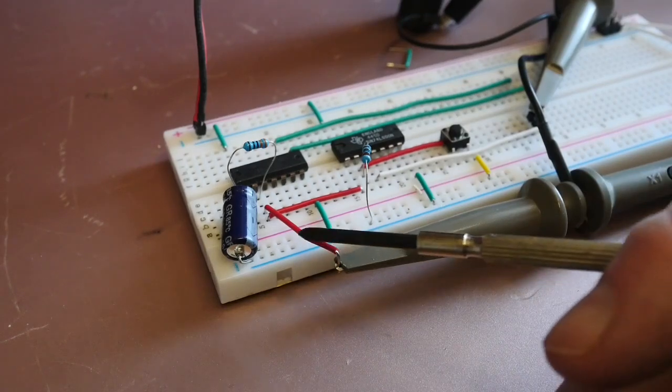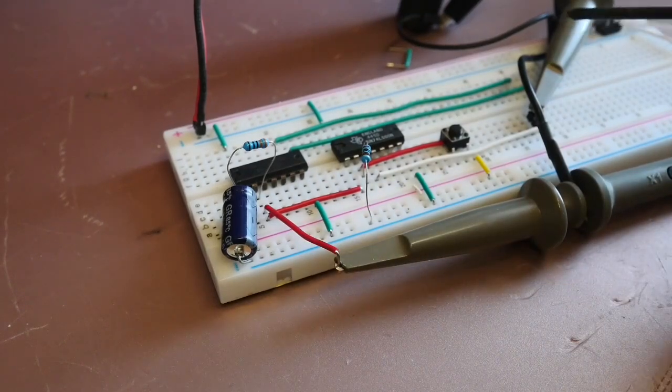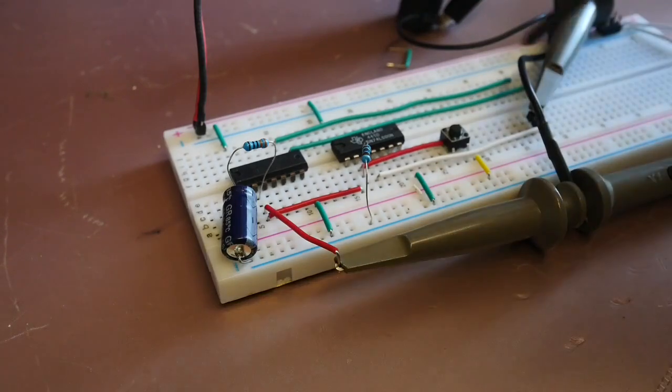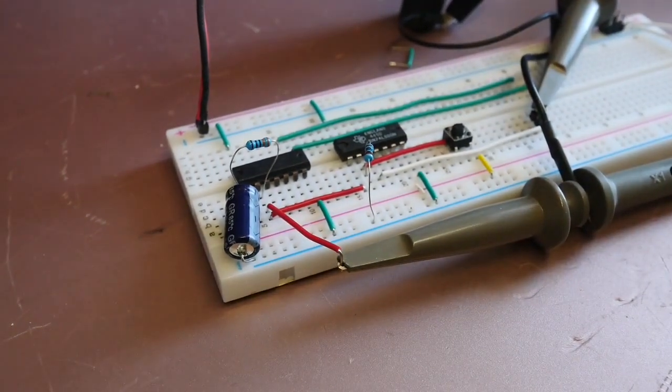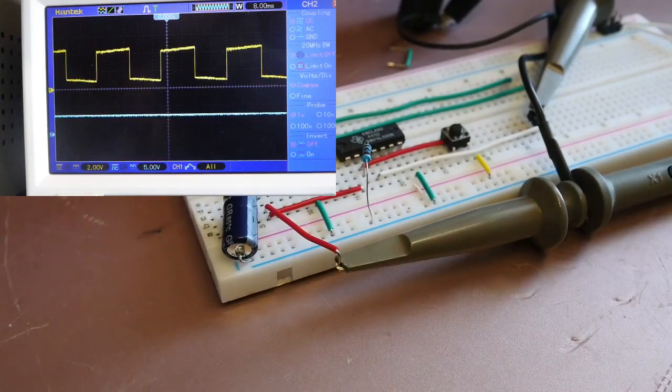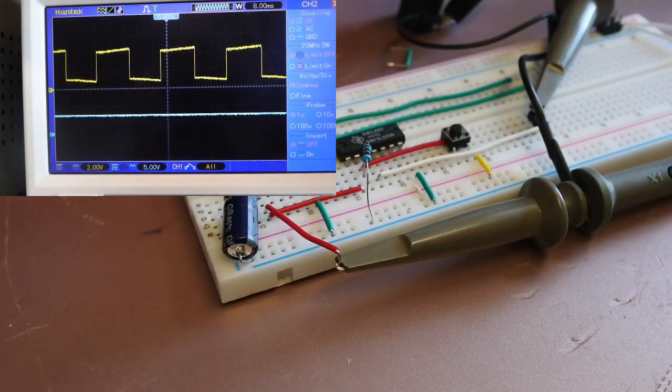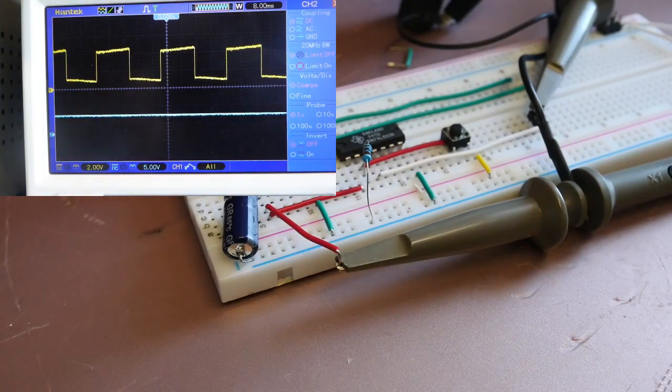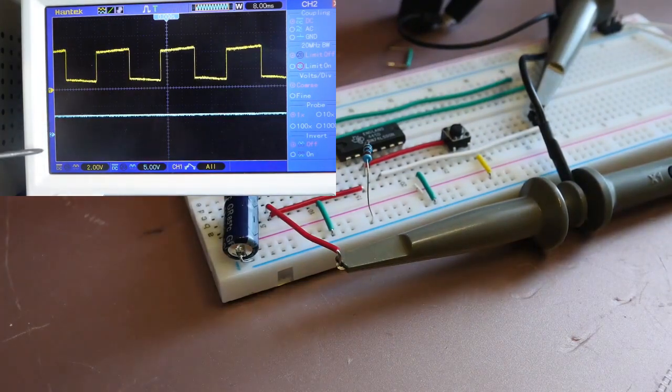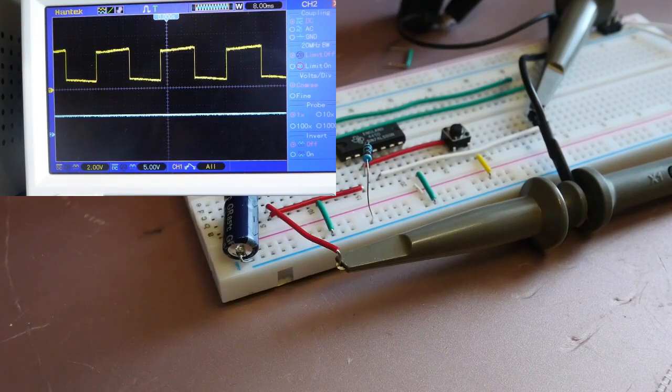So let's have a look what's happening. We've got channel one of the scope still attached to the oscillator. Channel two is now attached to the output of that gate. So let's have a look at the display. You can see what we've got there is we've still got the pulsing going on as normal, and we appear to have nothing here. Actually, if you look, what we actually have got is that that gate is high.